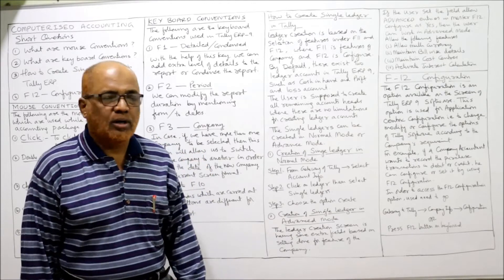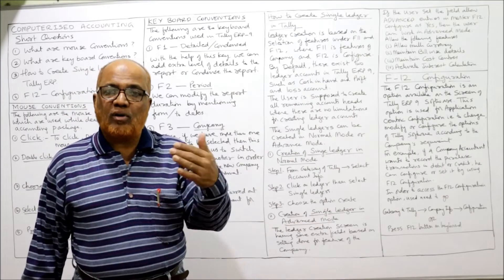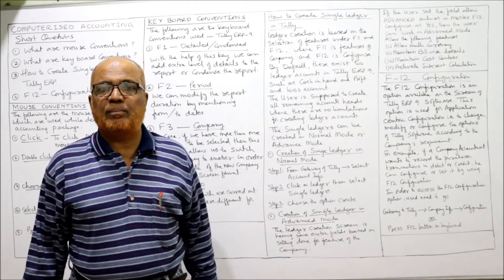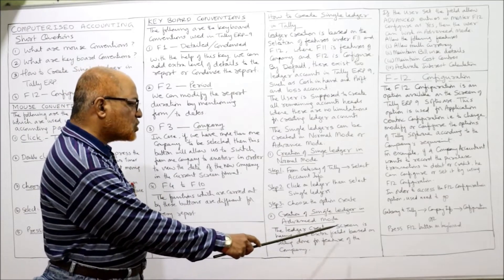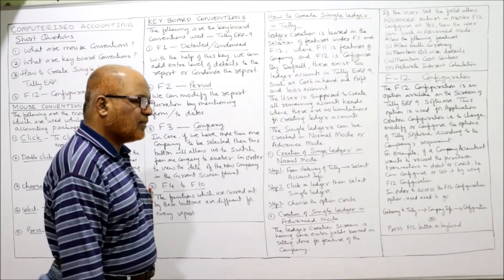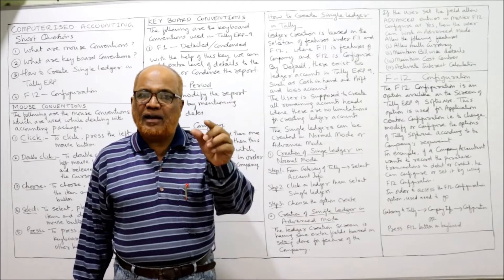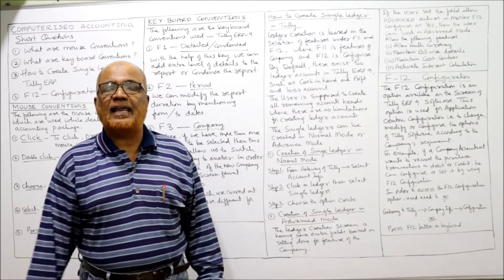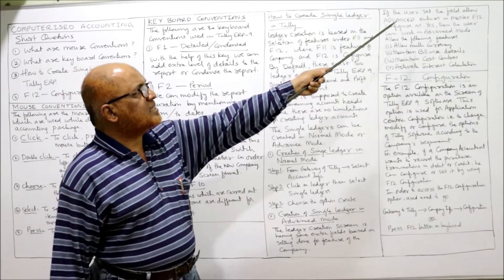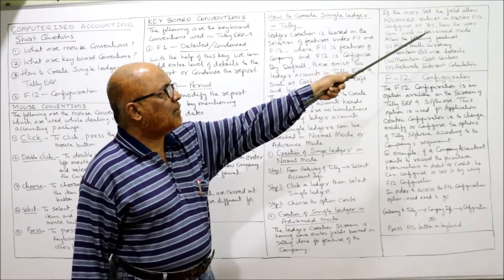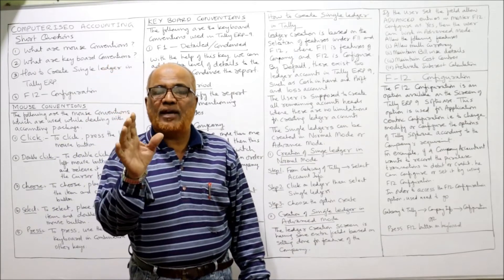In advanced mode, some additional information or extra fields are provided by the Tally package beyond normal mode. The ledger creation screen has extra fields based on the settings made for the company features under F11 and F12. If the user sets the field 'Allow Advanced Entries in Masters' in F12 configuration to Yes, then the user can work in advanced mode.